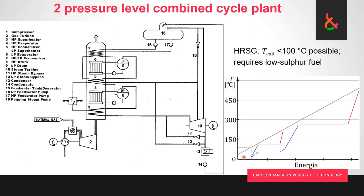Nobody has built or seriously considered four pressure levels, but three pressure levels are not even unusual. Essentially, the difference between a heat recovery steam generator and a conventional steam boiler — in terms of what limits our stack temperature, how low we can bring it — is that here we are heat transfer and second law limited.